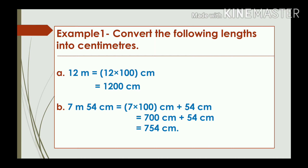Example 1: Convert the following lengths into centimetres. (A) 12 metres: multiply 12 by 100 to get 1200 centimetres. (B) 7 metres 54 centimetres: multiply 7 by 100 to get 700 centimetres, then add 54 centimetres, giving 754 centimetres. So 7 metres and 54 centimetres is converted into 754 centimetres.